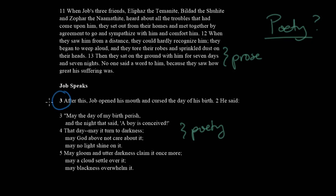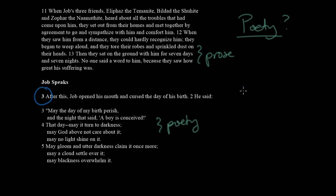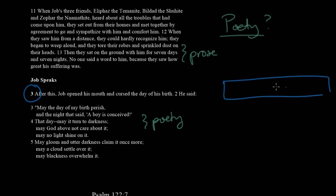As you start chapter 3 of Job, you see that it suddenly turns to poetry. If we look at the entire book of Job, the first two chapters are prose, and then the rest of the book is entirely poetry, except for the last chapter 42, which returns us again to prose. If so much of that book is poetry, it's probably important to figure out what makes it poetic, and it's interesting how often we simply ignore that question.